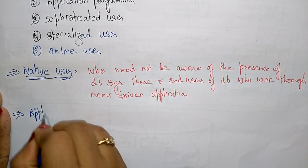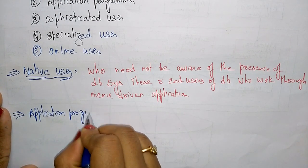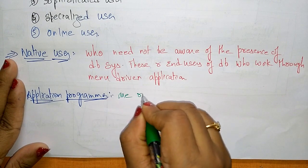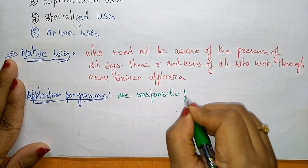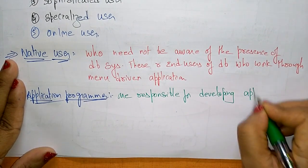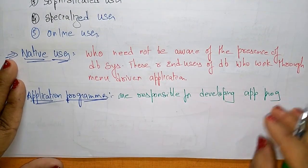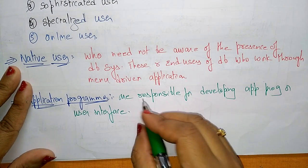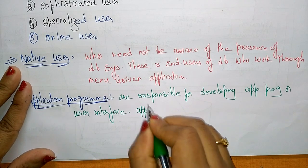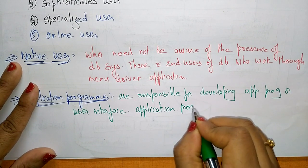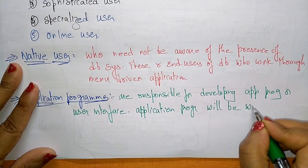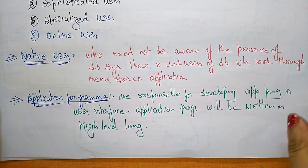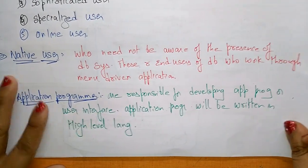Next is the application programmer. An application programmer is a person who develops the application and can interact with the database. The application programmer is responsible for developing application programs and user interfaces. These application programs are written in high-level languages — examples are C, C++, Java. Those are what you call application programs.